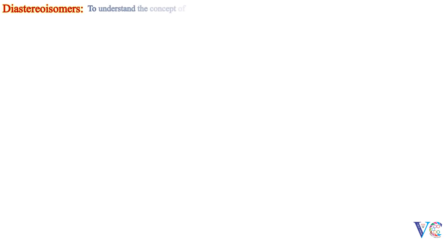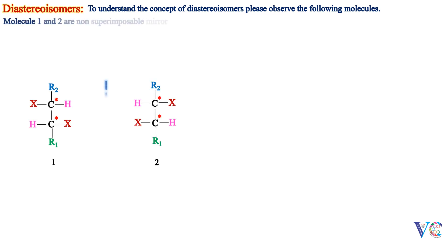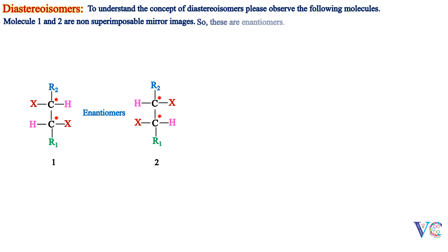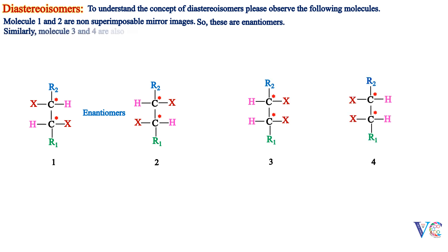Diastereoisomers — to understand the concept of diastereoisomers, please observe the following molecules. Molecules 1 and 2 are non-superimposable mirror images, so these are enantiomers. Similarly, molecules 3 and 4 are also non-superimposable mirror images, hence these are also enantiomers.